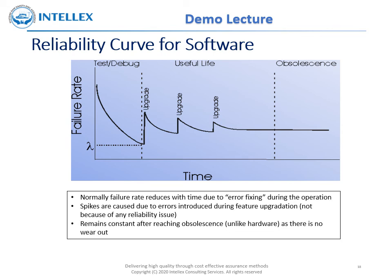Normally, the failure rate reduces with time due to error fixing during operation. Spikes are caused by errors introduced during feature upgrades. Note that these spikes are not because of any reliability issue or error fixing. After reaching obsolescence, the failure rate remains constant, unlike hardware, as there is no wear out in the case of software.